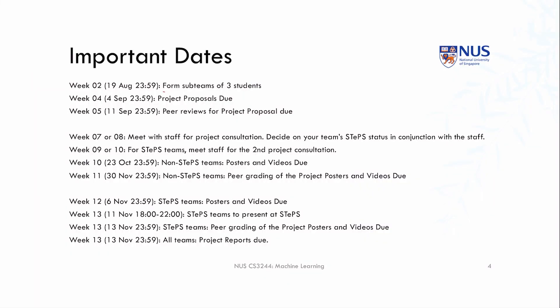Even before the midterm, there are key early project components. Next week we'll have a large Zoom tutorial with breakout rooms so you can get to know classmates and find teammates. You'll need to form groups of size three, which we call sub-teams, and we will then algorithmically arrange you into larger teams of five or six in week three. After that, you'll have one week as a team to come up with a non-binding project proposal, which you can change later.